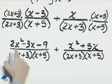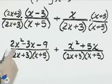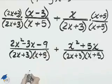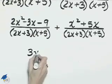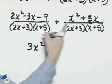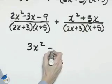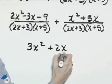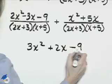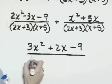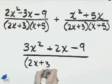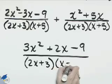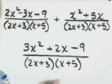Now we can add the like terms across this numerator. 2x squared plus x squared is 3x squared. Negative 3x and positive 5x is positive 2x, then minus 9. And the denominator is the quantity 2x plus 3 times the quantity x plus 5. And that's the sum of f of x and g of x.